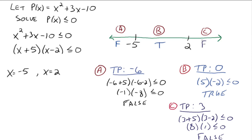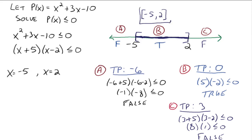We want to shade the true area, which is between negative 5 and 2. Since this is less than or equal to, we use brackets. In interval notation, the solution is negative 5 to 2, with brackets included.